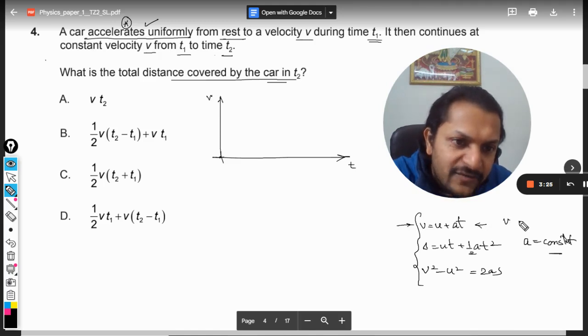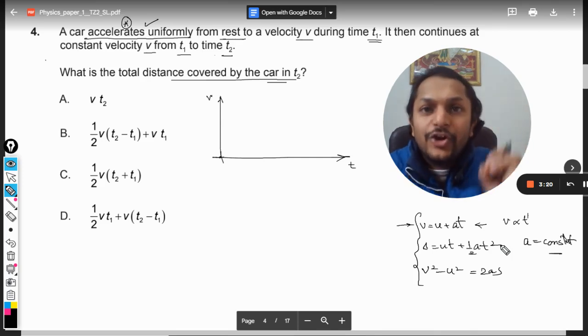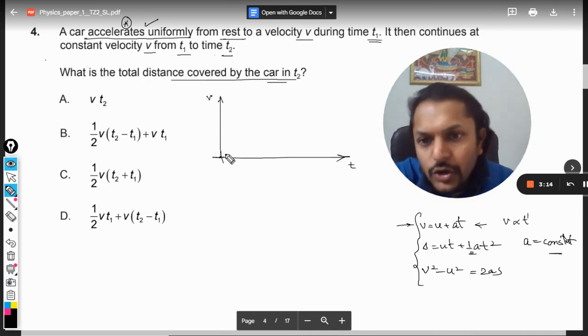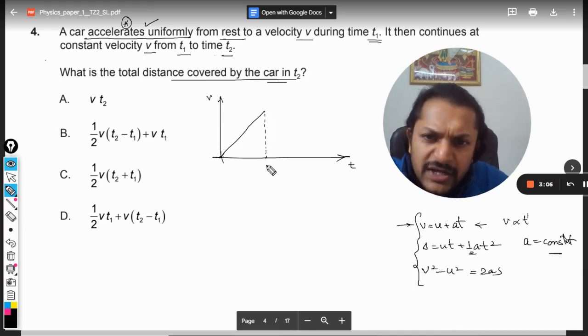Now it is given in the question itself that it is uniform acceleration, so these formulas are valid. V equals U plus AT only means that V is directly proportional to t raised to power 1. It means that the graph between velocity and time will be linear and it will be a straight line.